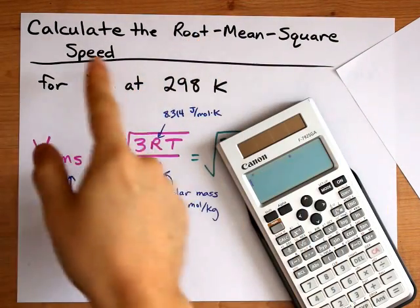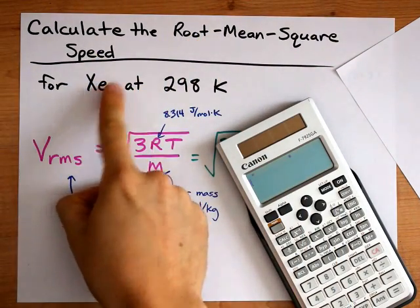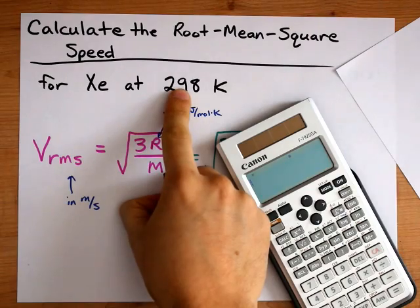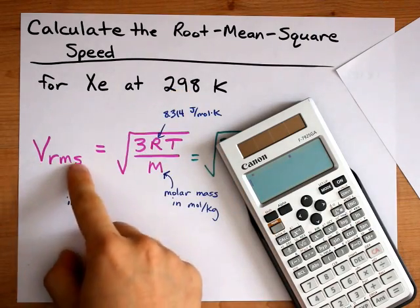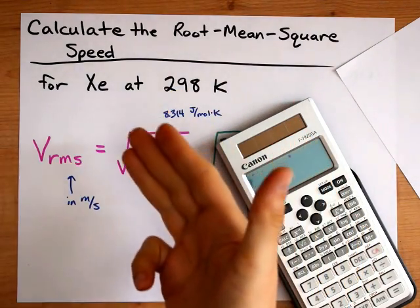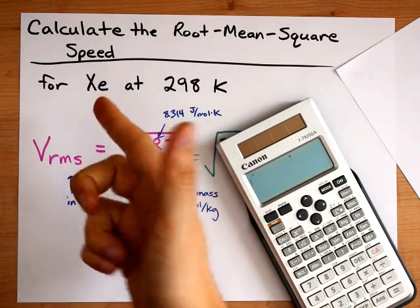All right, let's together calculate the root mean square speed for xenon atoms at 298K. Root mean square speed is one way we can measure how fast the xenon atoms are traveling.